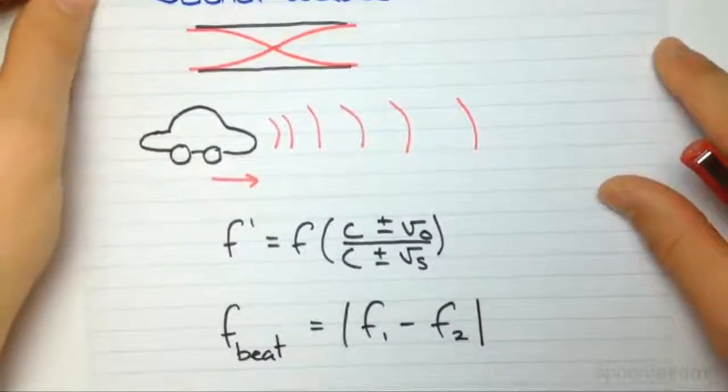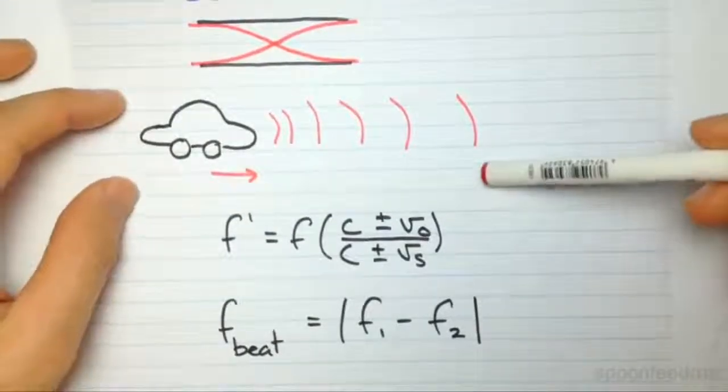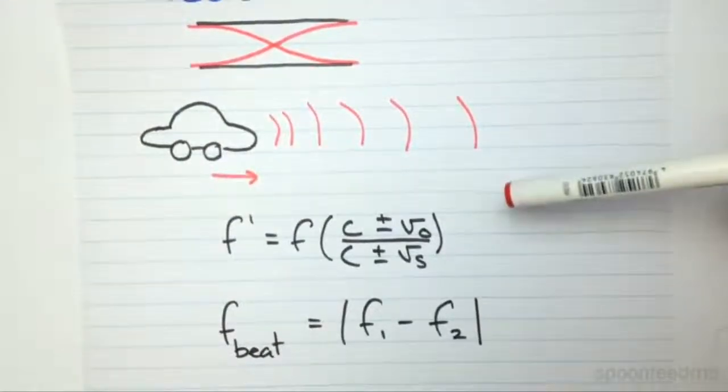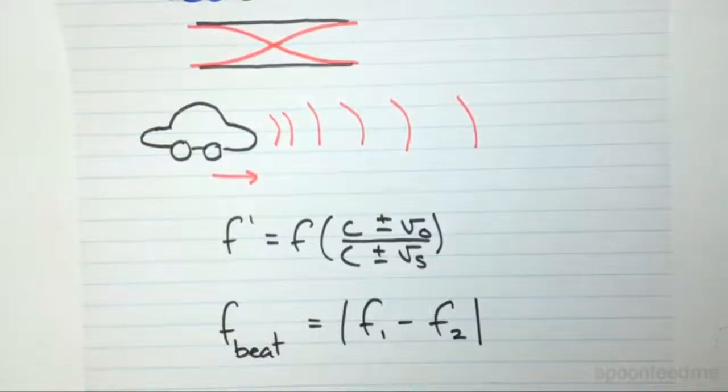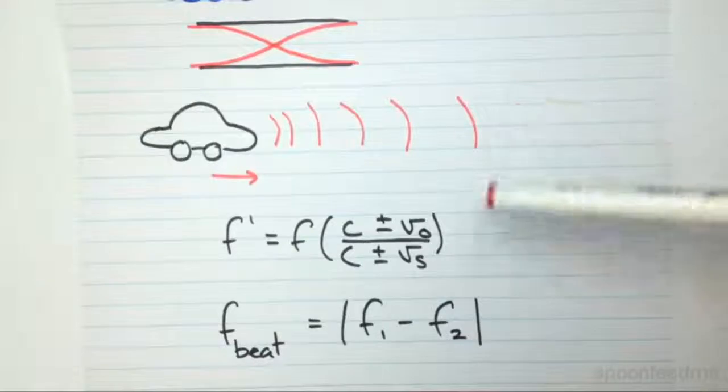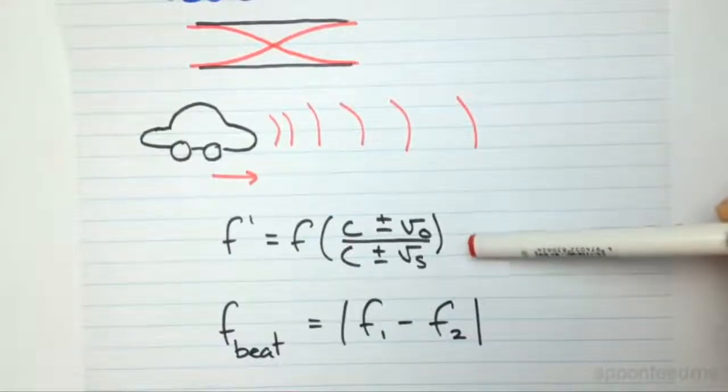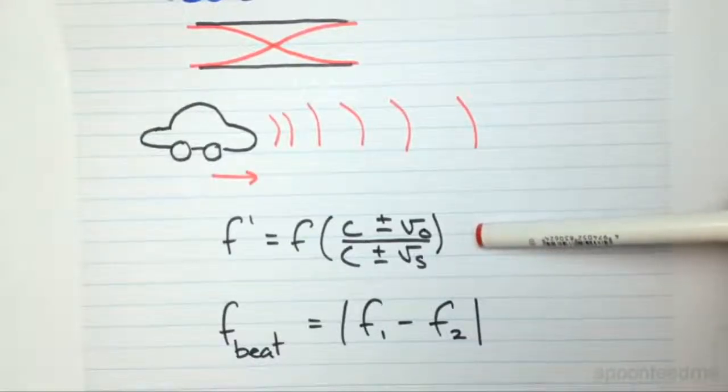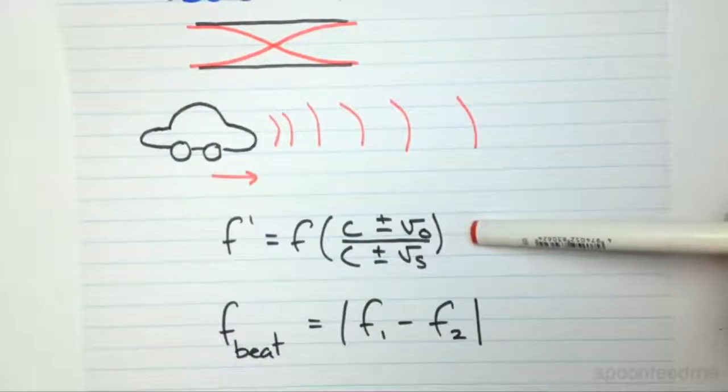And then we move on to something called the Doppler effect, which basically describes how the movement of a sound source can affect the frequency or pitch of a sound wave, which is represented as well by this equation here, which we'll look at in more detail in a future video.